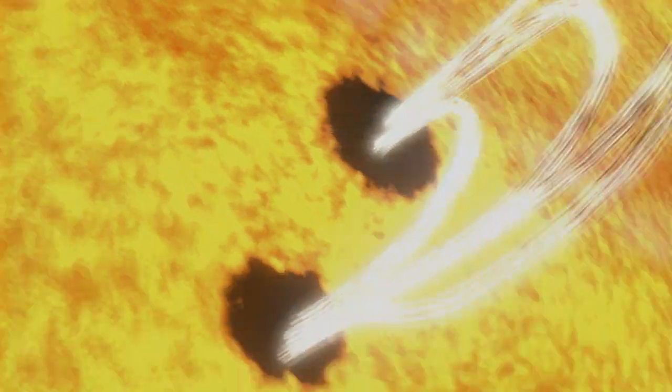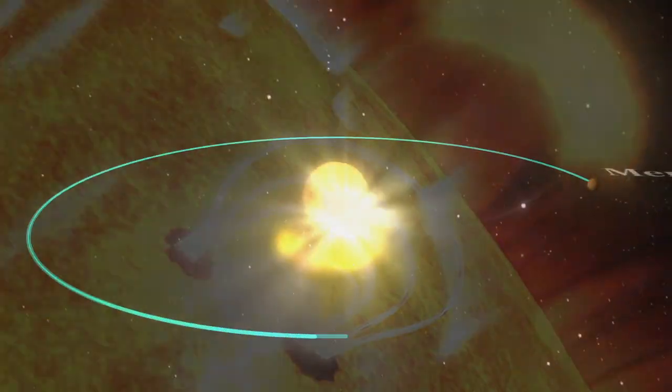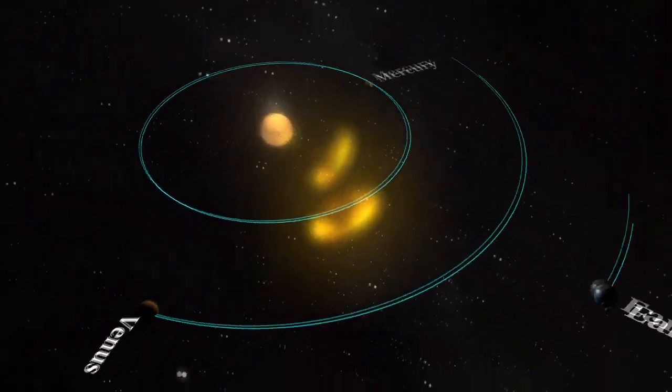The number of sunspots is important because sunspots are the visual markers of where powerful magnetic fields have emerged from the Sun's interior. These magnetic fields power solar flares and coronal mass ejections, which can affect Earth and other objects in the solar system.